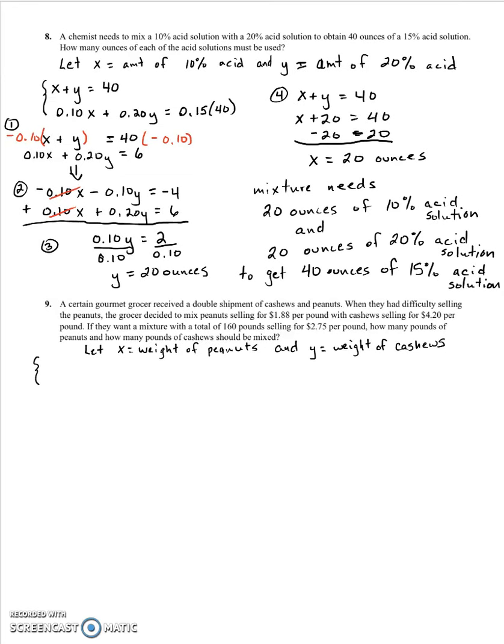Our equations we have. We know we have 160 pounds total. So the weight of peanuts plus the weight of cashews has to equal 160. Now, the price of peanuts, well, of X amount of peanuts, plus the price of Y amount of cashews needs to equal the total price of the 160 pounds if we sell it at 275 a pound. So let's solve this.